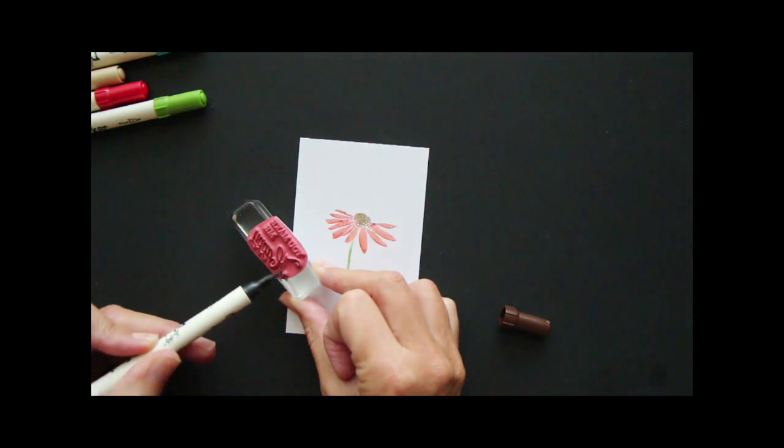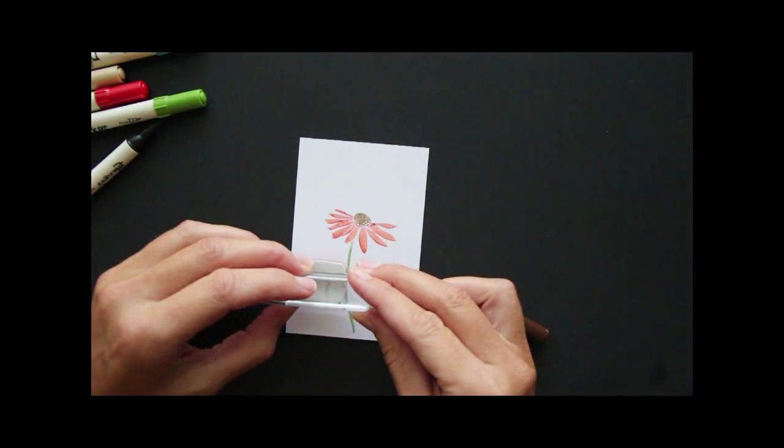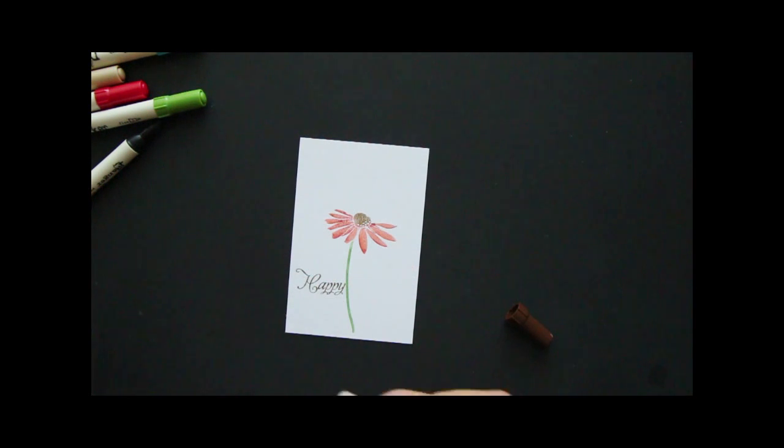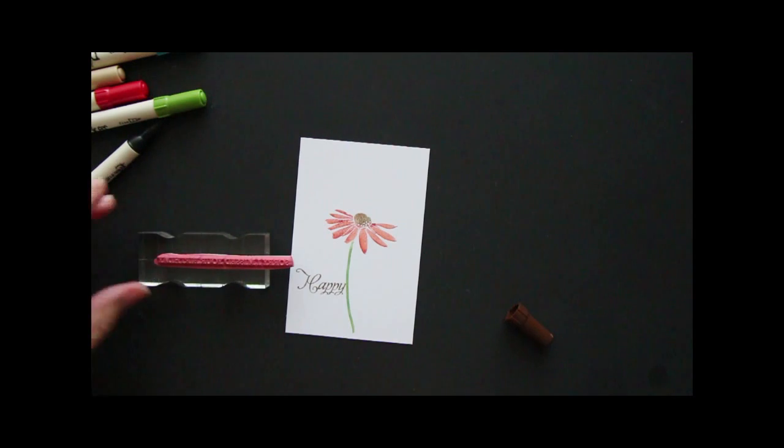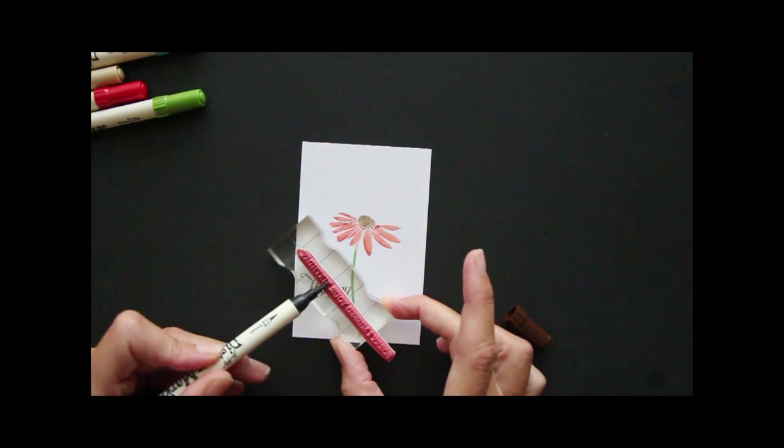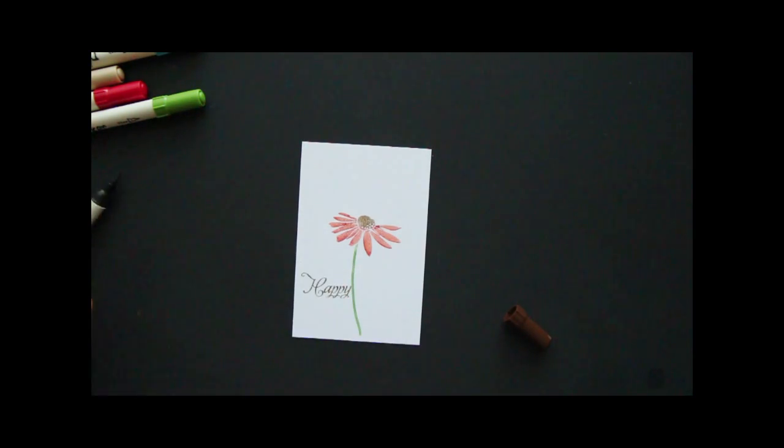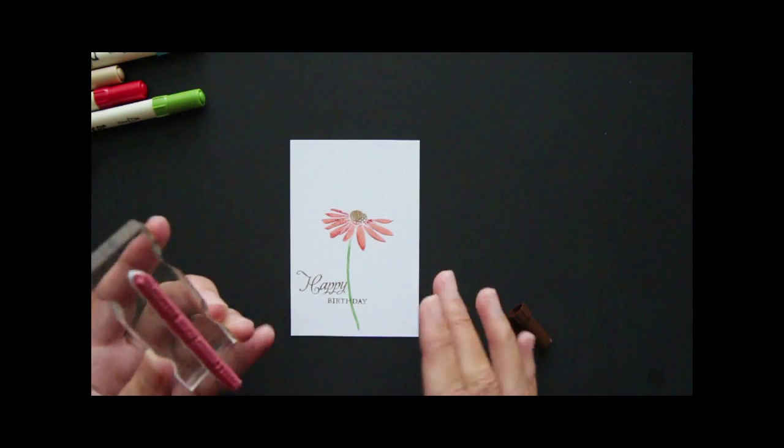And then stamp it. I have another sentiment that says, sorry, I missed your birthday, but I want to say happy birthday. So I took the happy from the first one. And now I ink up the birthday from the second one. Breathe on it, stamp it, and then I have happy birthday.